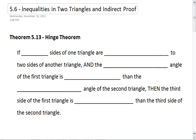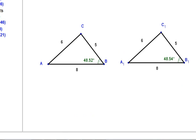Section 5.6, Inequalities in Two Triangles and Indirect Proof. Theorem 5.13 is the Hinge Theorem. And before we fill in the blanks, let's look at these two triangles.